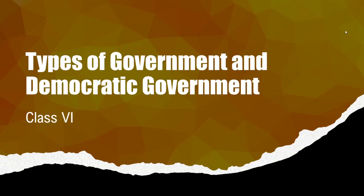We moved ahead with the types of government, where we read about the different types: monarchy, dictatorship, federal form and unitary form of government. Monarchy is where a king or queen is the head. Dictatorship is where one single individual or a small group of people has all the powers. Unitary form of government is where there is only one government for the whole country, and the federal form is where the power is distributed between the centre and the state.